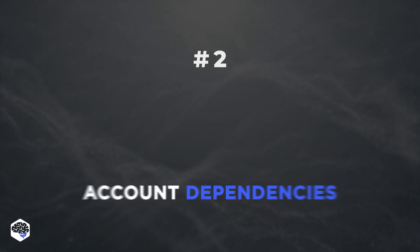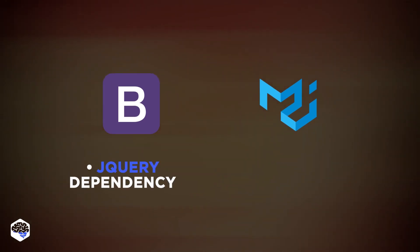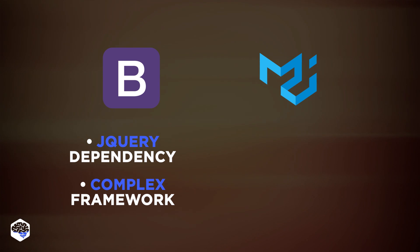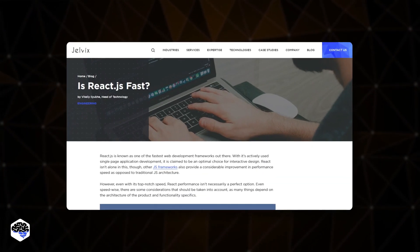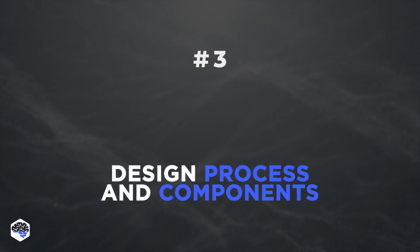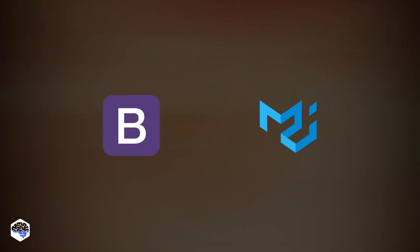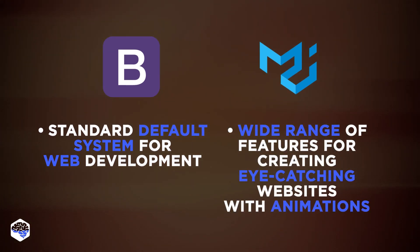The next point of difference is component dependencies. With tons of scripts, features, CSS classes, and jQuery dependency, Bootstrap has proven to be a complex framework. In contrast, Material Design has React-based components that are independent of each other. Considering design process and components, Bootstrap provides developers with a standard default system for creating easy websites and web applications, while Material offers a wide range of features for creating eye-catching websites with bold colors and engaging animations.